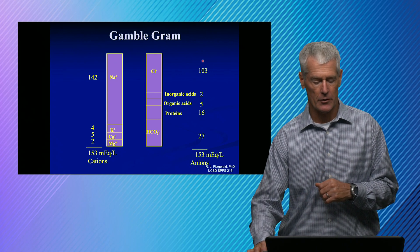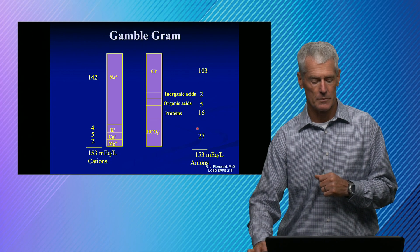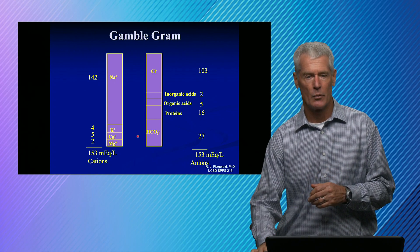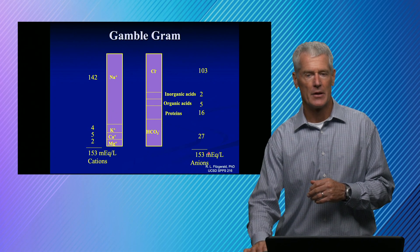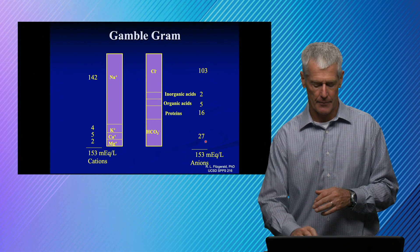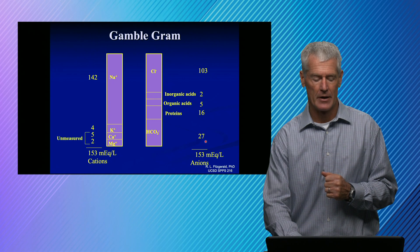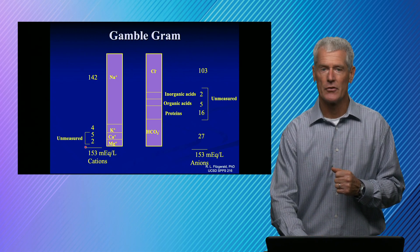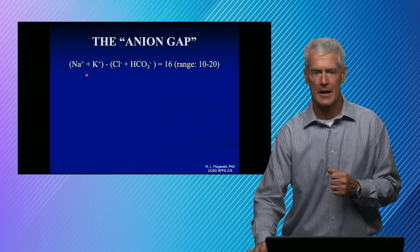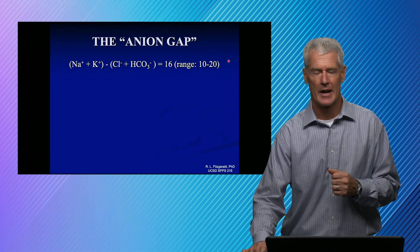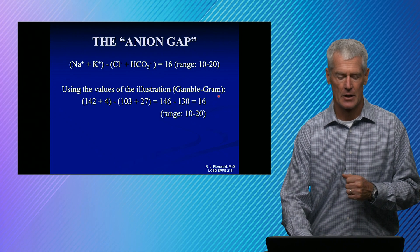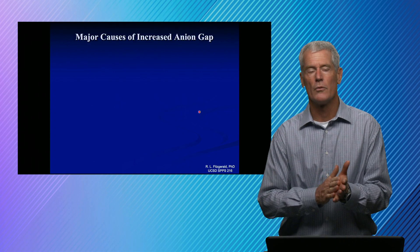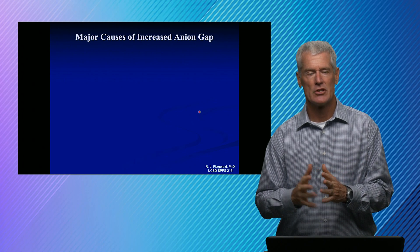Normal chloride is about 103 and normal bicarbonate about 27. When we add sodium and potassium and subtract chloride and bicarbonate, they don't completely cancel — we have more unmeasured anions than unmeasured cations, producing the gap. The calculation is cations minus anions; a normal anion gap is 10 to 20, with an average around 16. Some people omit potassium from the formula, which shifts the reference range down by about 4 units.